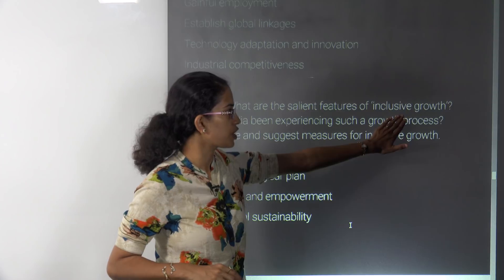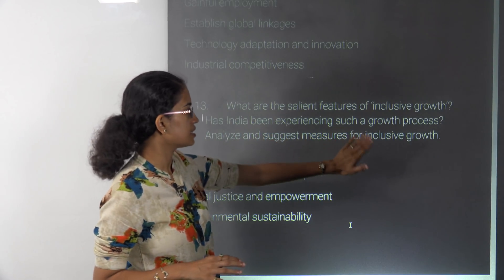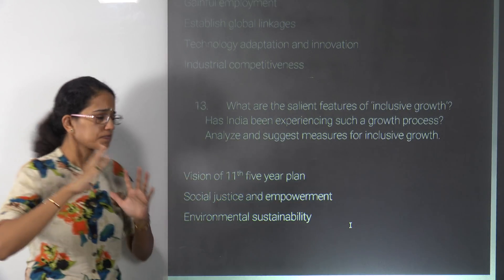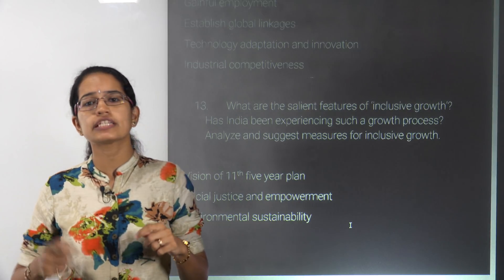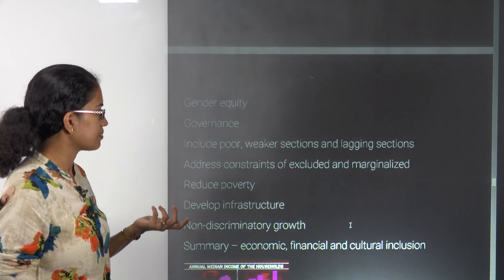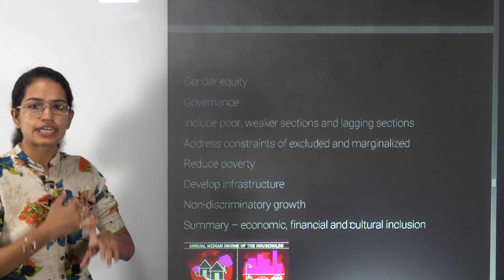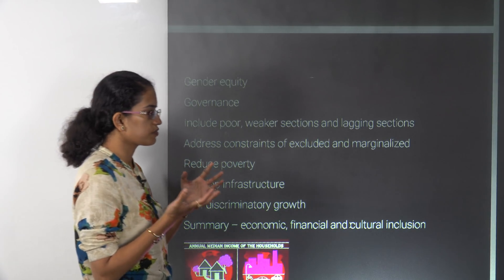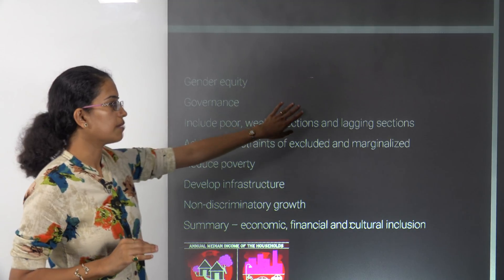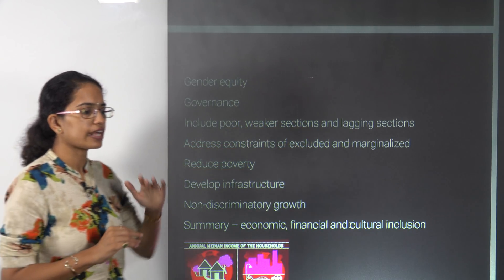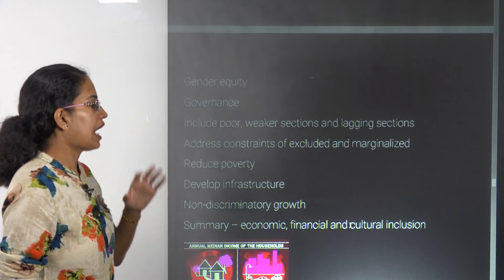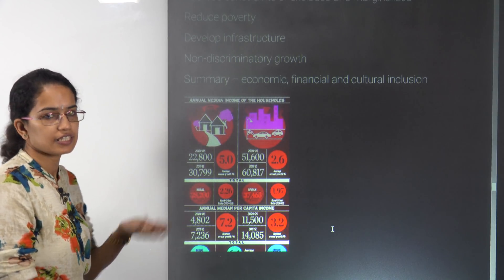The next question talks about the salient features of inclusive growth and whether India has been experiencing such a growth process. India is working towards inclusive growth — not just growth in GDP numbers, but focusing on empowerment, enhancing social capital, environmental stability, sustainable development, and gender equity. The poor, weaker, and marginalized sections should be brought in line with other classes. Good governance, reducing poverty, infrastructure development, and social issues are key focus areas.